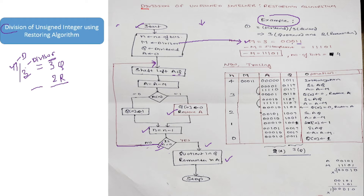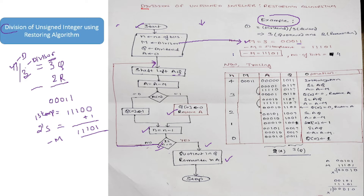To represent negative M, we take the 2's complement of 3. Since 3 is written as 0 0 0 1 1, its 1's complement is 1 1 1 0 0, and adding 1 gives the 2's complement: 1 1 1 0 1. So minus M is represented as 1 1 1 0 1. The number of bits is taken depending on the inputs — to represent 11, only 4 bits are sufficient, so N equals 4.